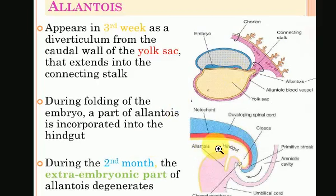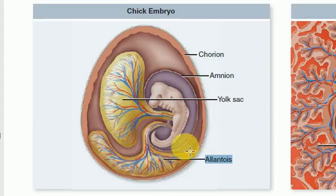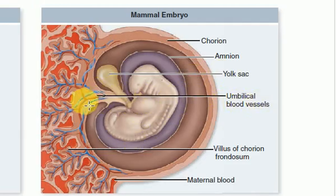During the second month of pregnancy, the extra-embryonic part of the Allantois degenerates. The umbilical cord also develops from the Allantois. In mammalian embryos, the Allantois contributes blood vessels to the developing umbilical cord.